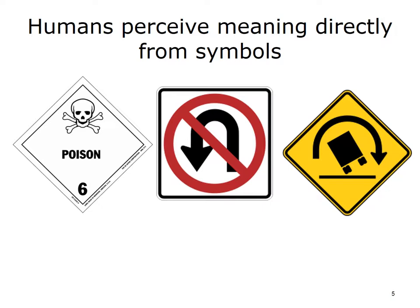United States road signs use images that directly convey meaning — for example, the no U-turn sign. Similarly, a road sign with a picture of a tipping truck lets drivers know that the road conditions are conducive to rolling vehicles. When it is important to communicate meaning quickly, we use signs and symbols. These concepts have been applied to clearly communicate process information — for example, the steps and their order in a work process. Like signs that communicate messages, process maps are graphical representations of processes. They use standard symbols to communicate information about a process.